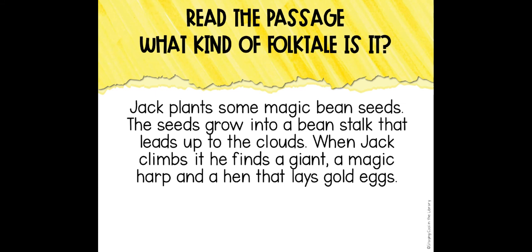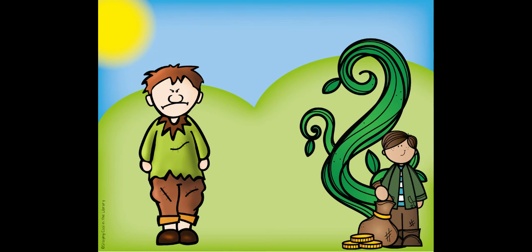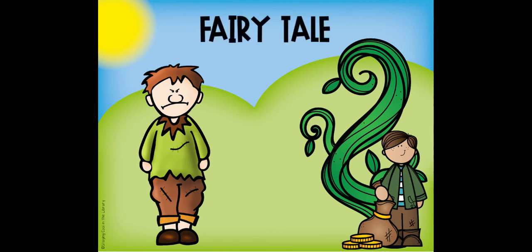Let's read this one. Jack plants magic beans. The seeds grow into a beanstalk that leads up to the clouds. When Jack climbs it, he finds a giant, a magic harp, and a hen that lays golden eggs. If you said a fairy tale, you are right. Great job.